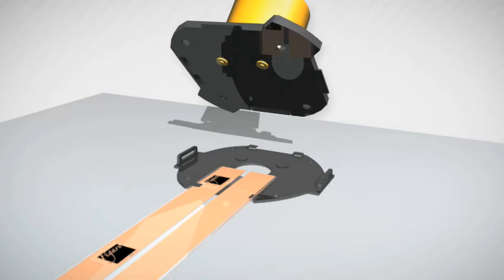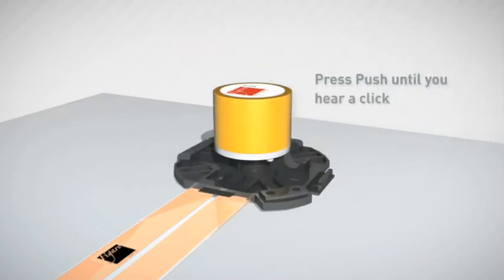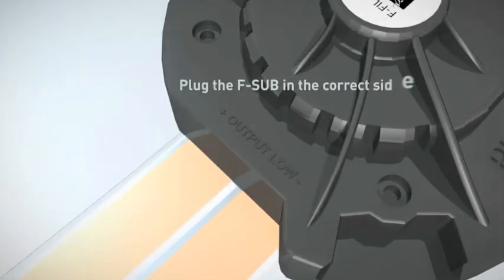Insert the F-25 on the base rigid fin and press PUSH until you hear a click. To plug the F-SUB, check on the F-FIL output LOW. This is the correct side.